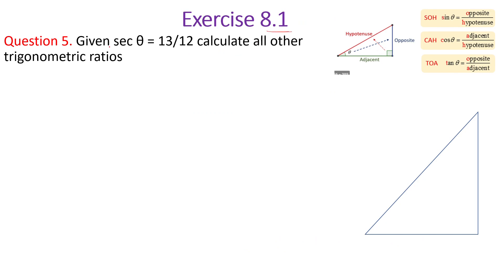Now we come to question number 5. Given sec theta equals to 13 upon 12. We can write this as 13K upon 12K. We have to calculate all other trigonometric ratios.